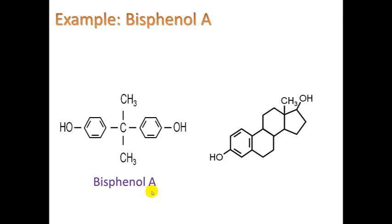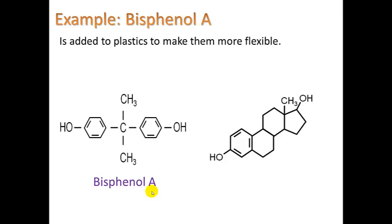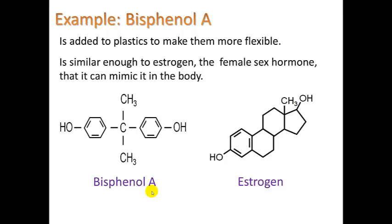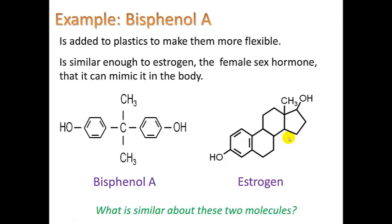One example of an endocrine disruptor is bisphenol A (BPA), which received attention because it is a component used to make hard plastic water bottles — typically a number seven plastic. The shape of bisphenol A is similar enough to estrogen, the female sex hormone, that it can mimic it in the body. Even though these molecules are not the same, they share essential features: both have a CH3 group and an OH group, allowing BPA to lock into estrogen receptors.